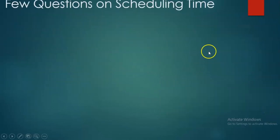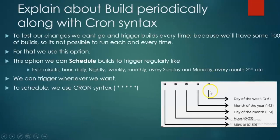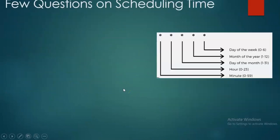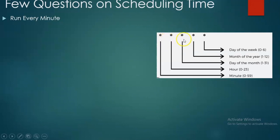In the next class we will see more about scheduling. In the previous class we saw why Build Periodically is important and how to schedule. Now let's see a few questions on scheduling a job. Every minute means all five stars — build triggers every minute.